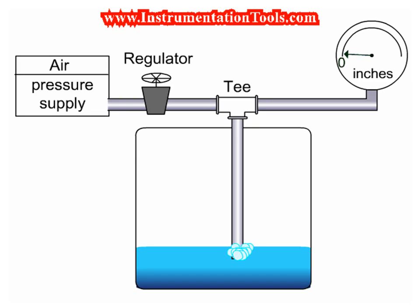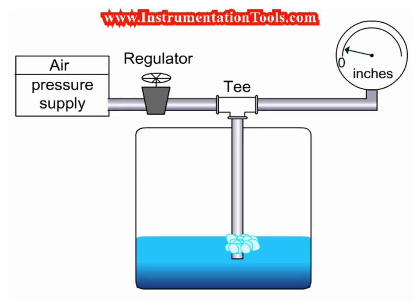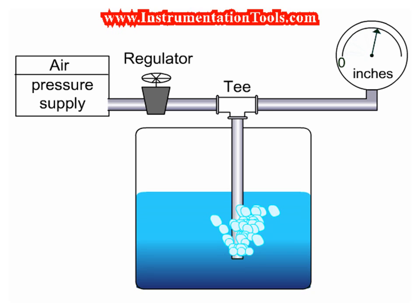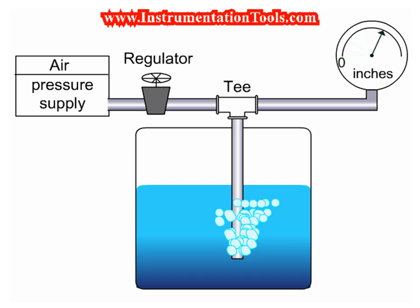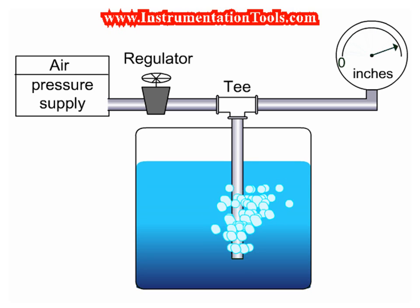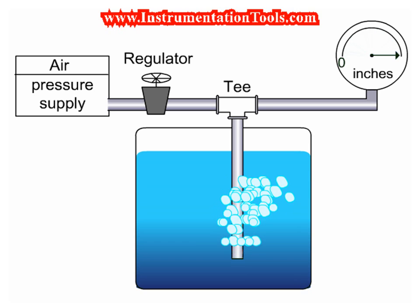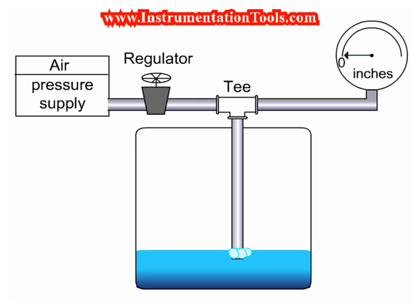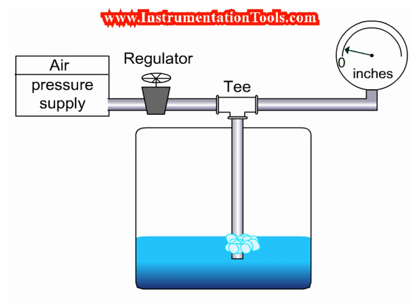Bubbler Level Measurement Working Principle. A fixed constant air supply is given at the inlet. When there is no level in the tank, total air passes to the atmosphere through the pipe in the tank. When the level in the tank increases, proportional back pressure increases, and the increased back pressure is proportional to the level in the tank.